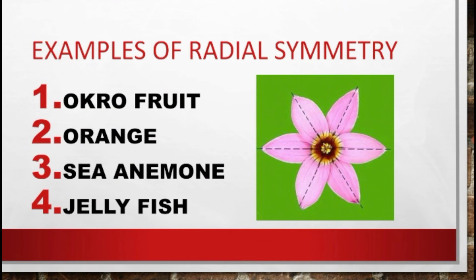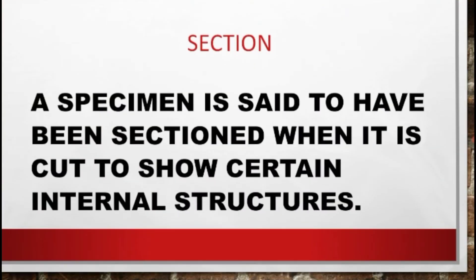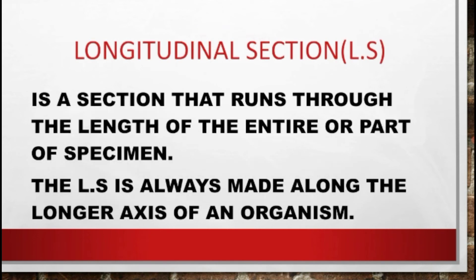Now let's look at sectioning. A specimen is said to have been sectioned when it is cut to show certain internal structures. The first type is the longitudinal section, or LS. A longitudinal section runs through the length of the entire or part of a specimen and is always made along the longer axis of an organism.